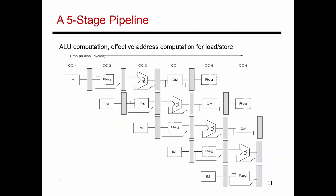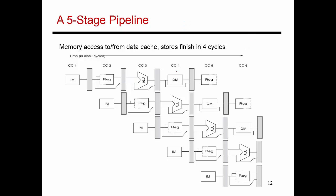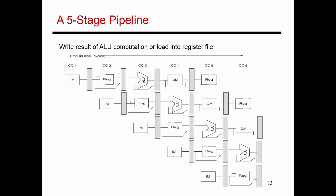The third stage is the ALU stage—register values read earlier feed as inputs, and you perform the math. For an add instruction, the addition happens here. For a load instruction, an offset gets added to the base register. In the fourth stage, if it's a load you read from data memory; if it's a store you write to data memory, and the store is essentially done at this point. In the fifth stage, the result produced gets written into the register file, completing most instructions.